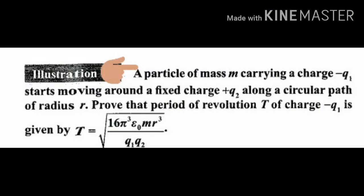A particle of mass m carrying a charge minus q1 starts moving around a fixed charge plus q2 along a circular path of radius R. Prove that the period of revolution T of charge minus q1 is given by T equals under root 16 pi cube epsilon 0 mr cube divided by q1 q2.